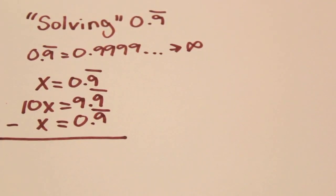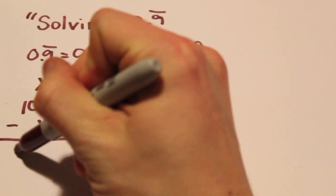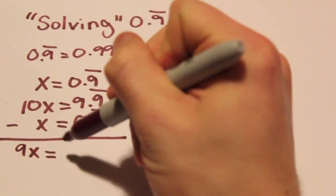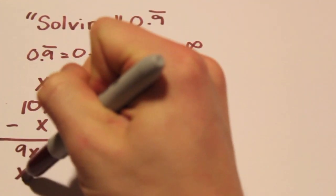On the right side of the equation, everything to the right of the decimal place cancels out, and you get 9x equals 9. So x equals 1.